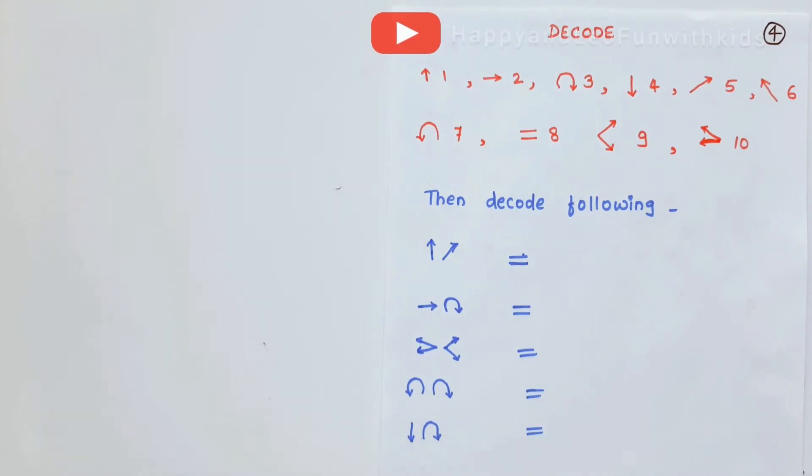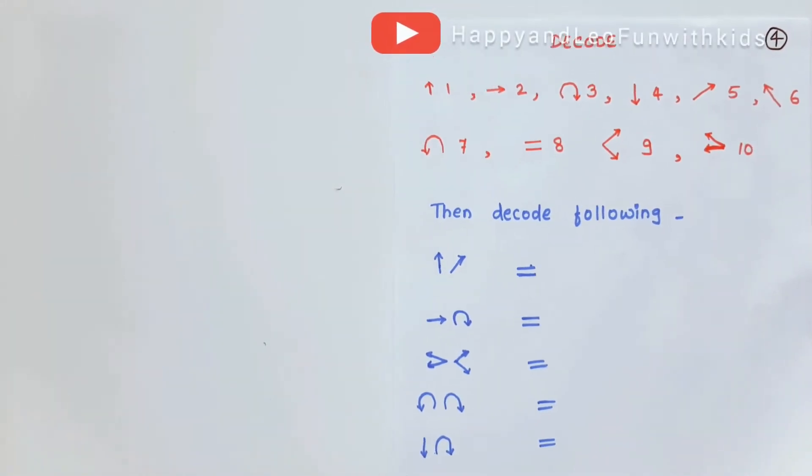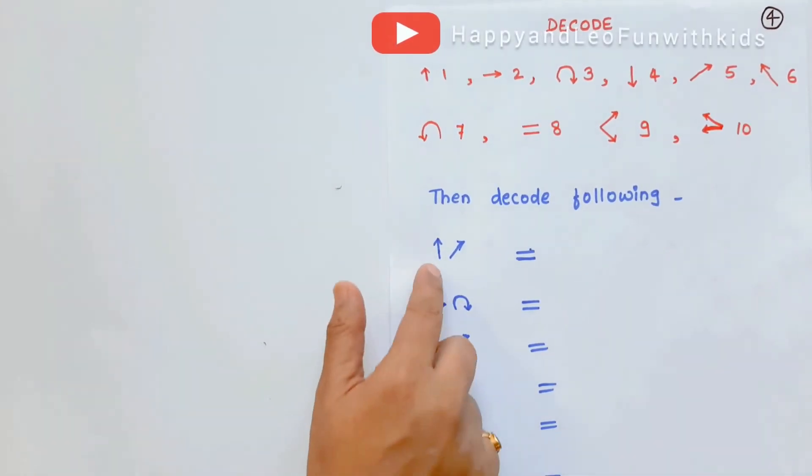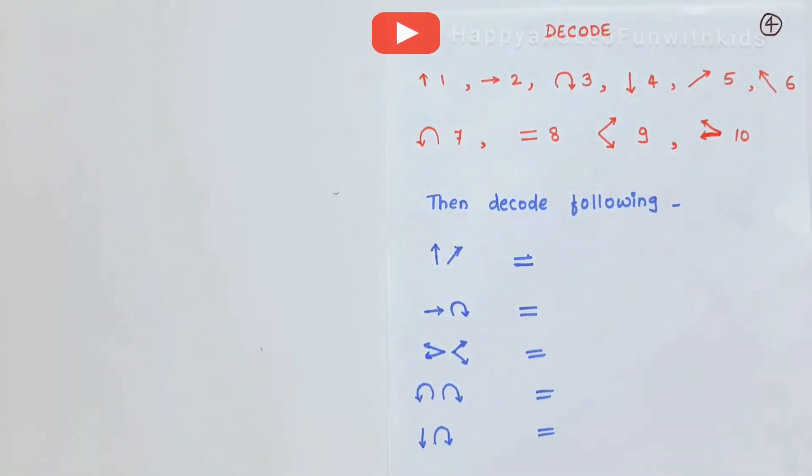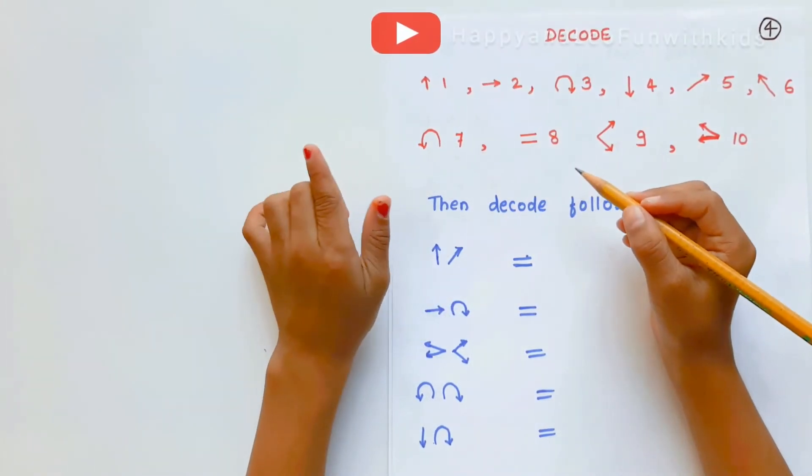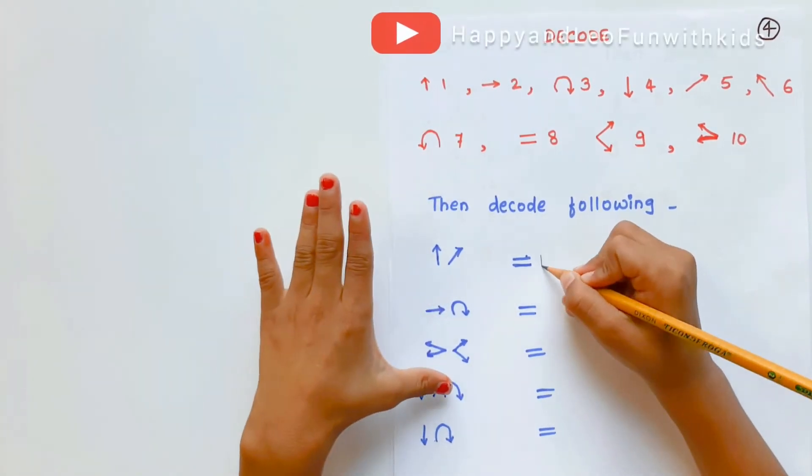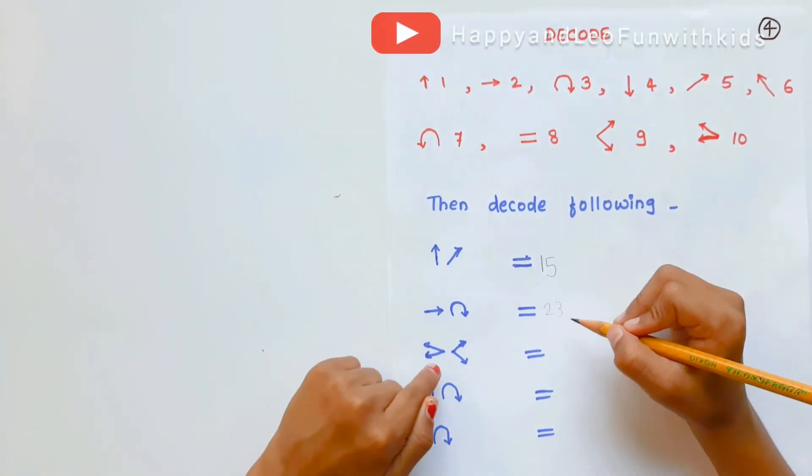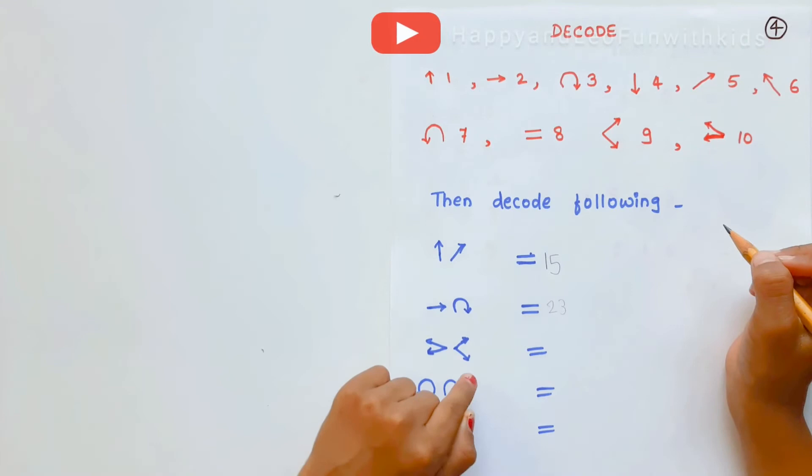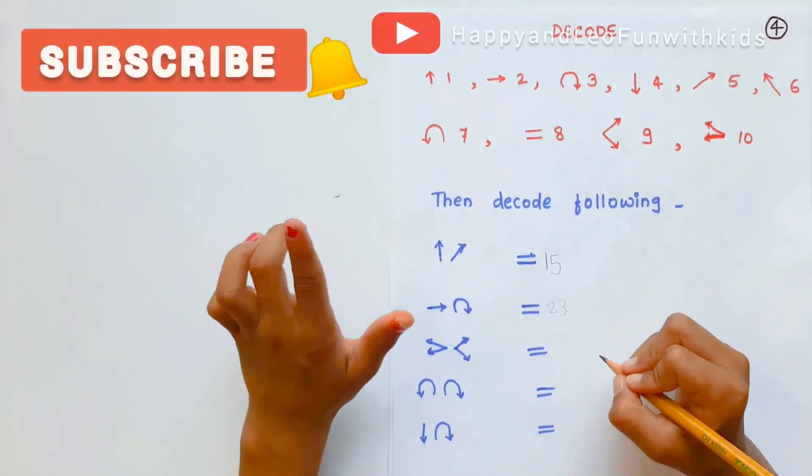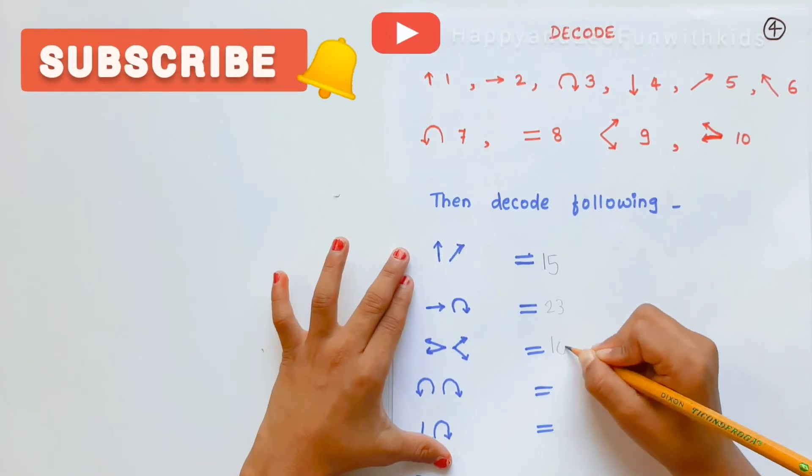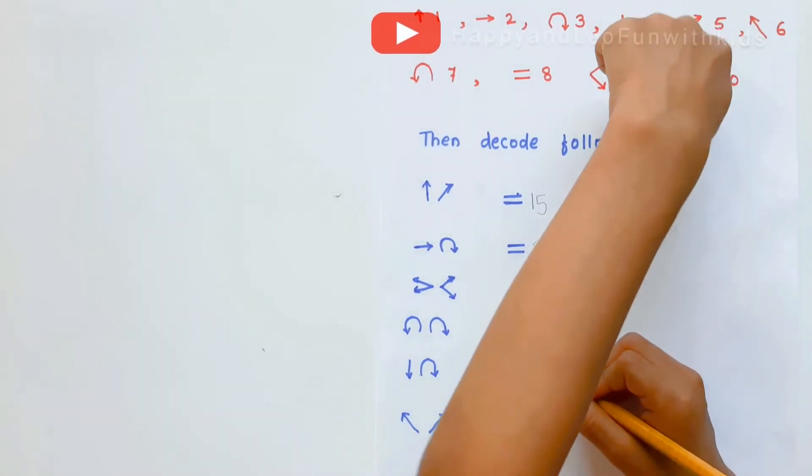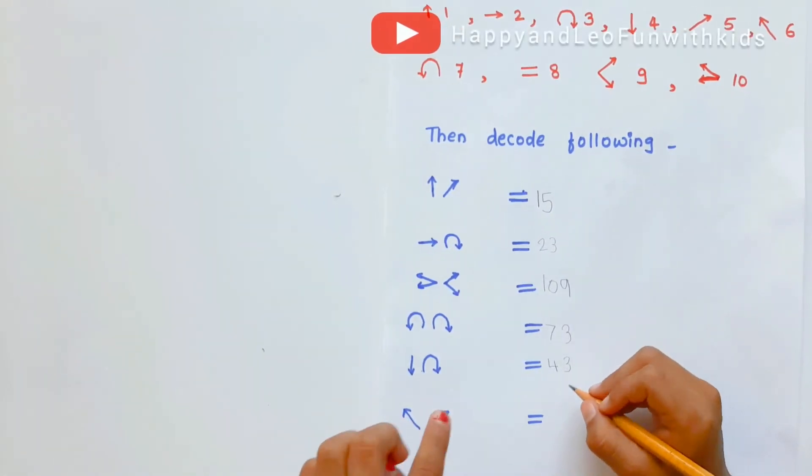Our next set of worksheets is the same. Decode these numbers. The numbers are given with some symbols. You have to decode the following. Write these symbols and convert it into numbers. So one is up. So this is one and then five. And now this one is ten and this one is nine, so it's one hundred and nine. Four and three, forty-three. There's one here and there's one here, so this is six and this is five.